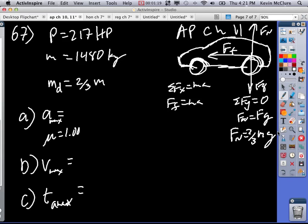So then F sub F is equal to mu F sub N, which equals MA. So A is going to equal mu times two-thirds MG over M, so the mass cancels.